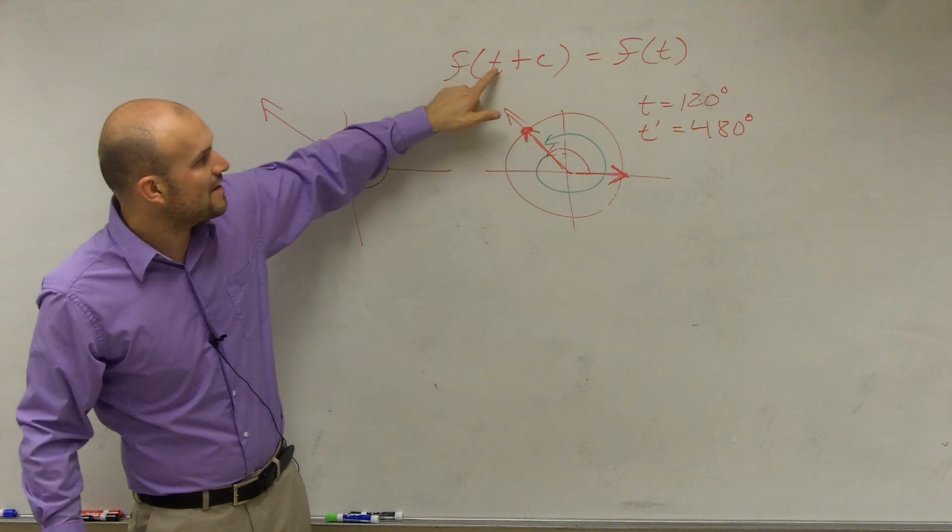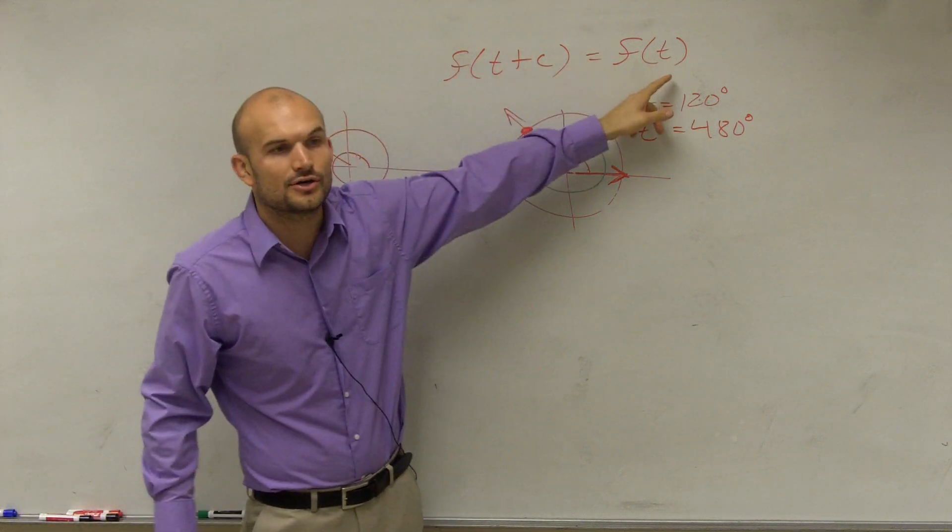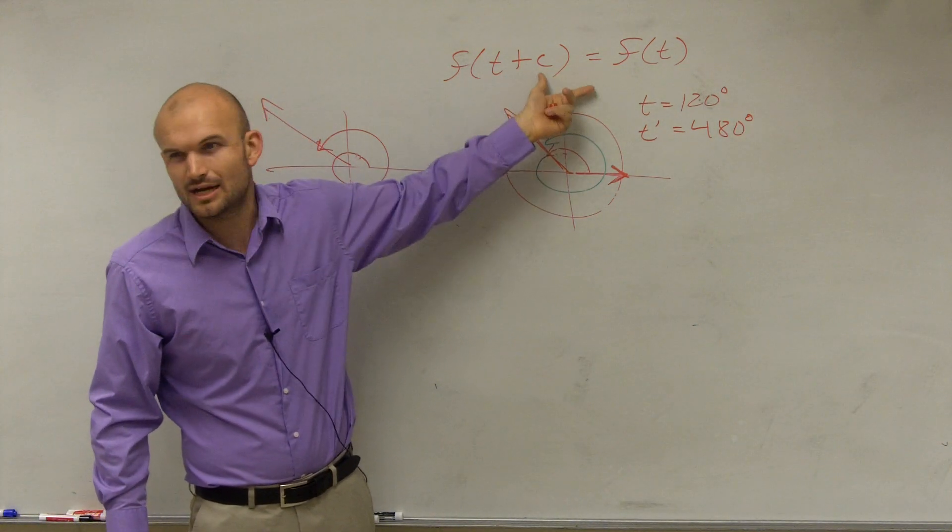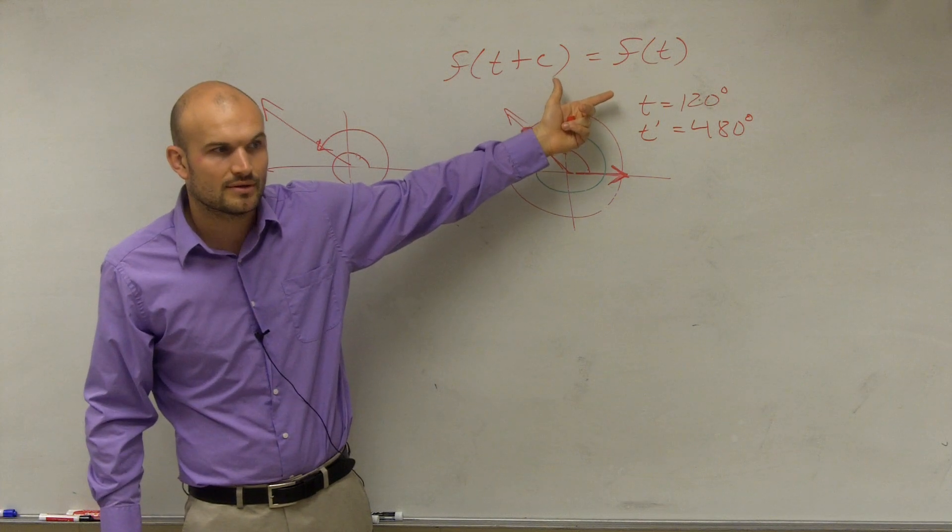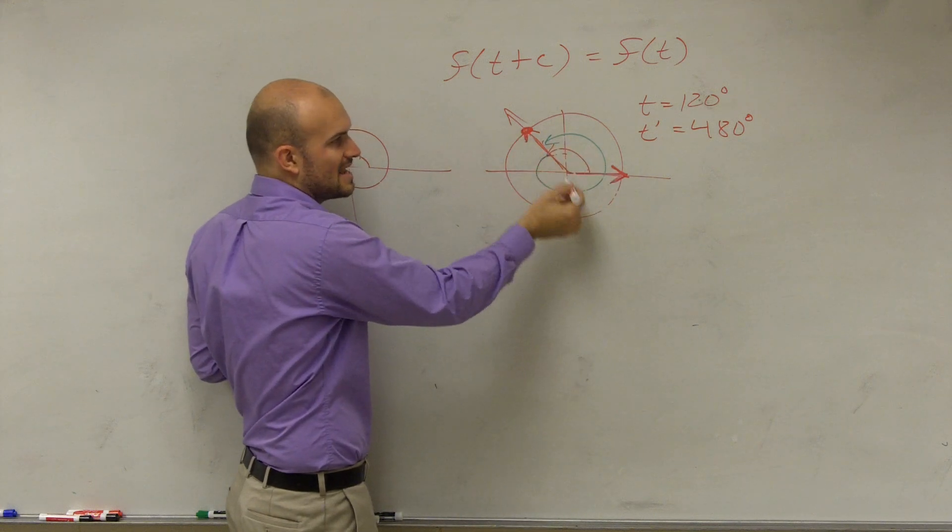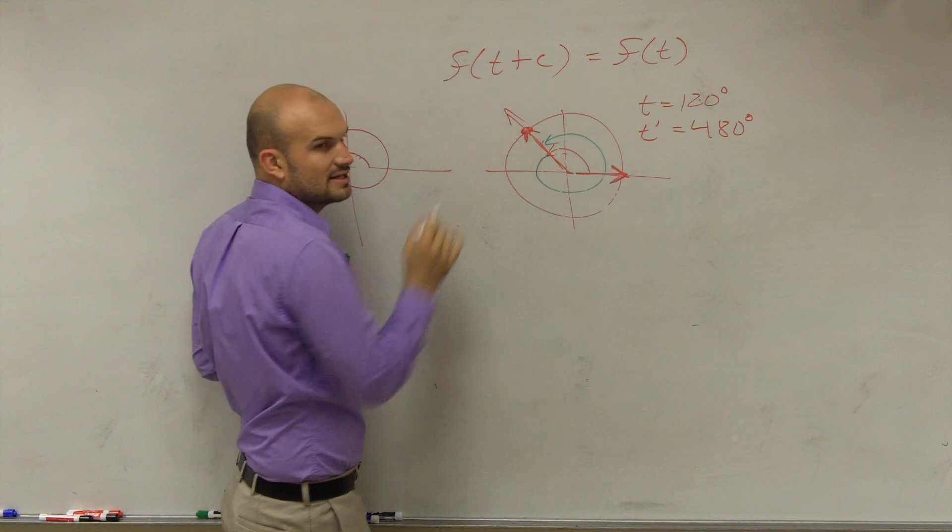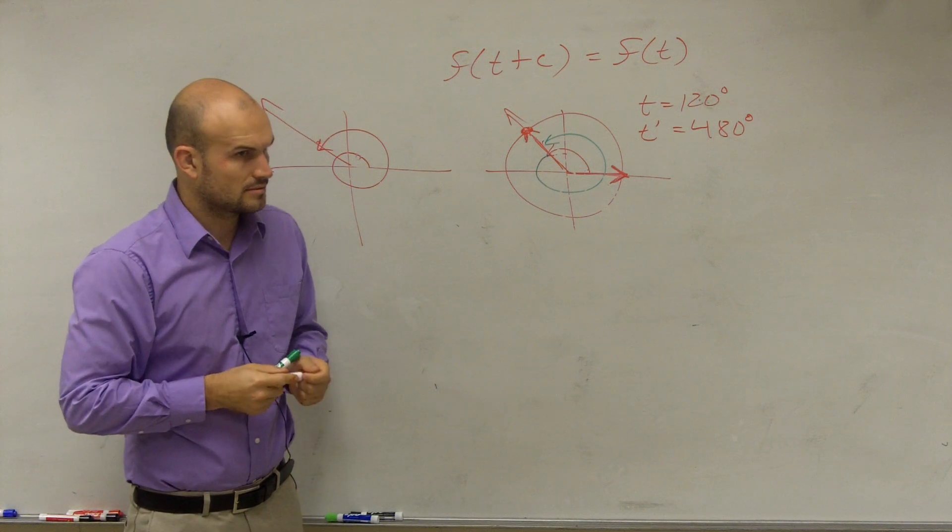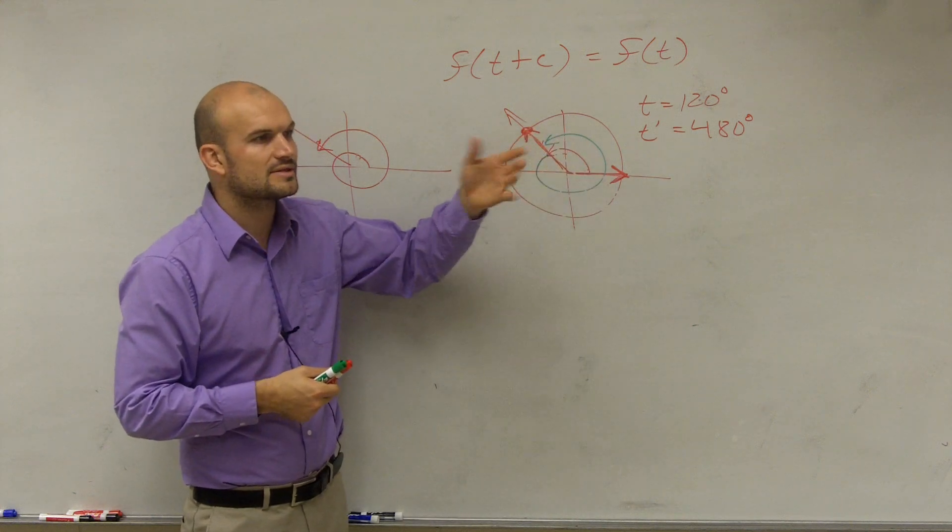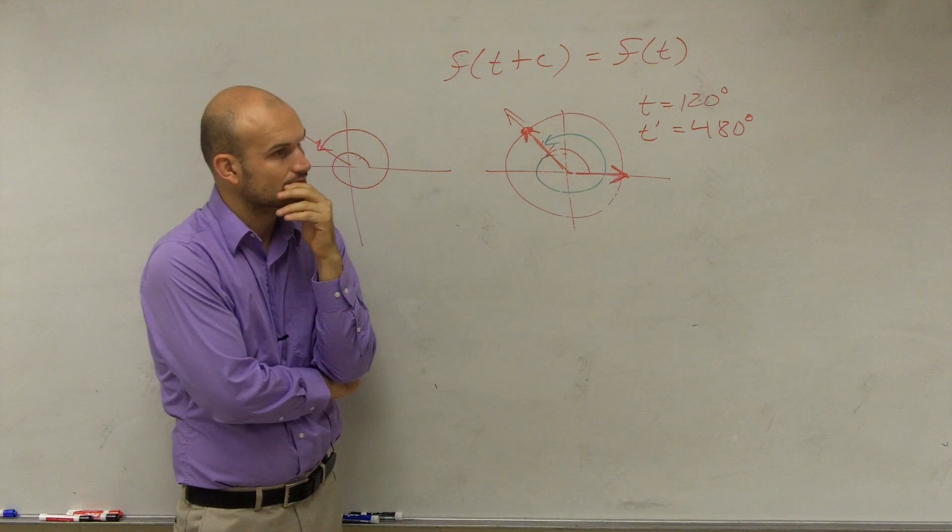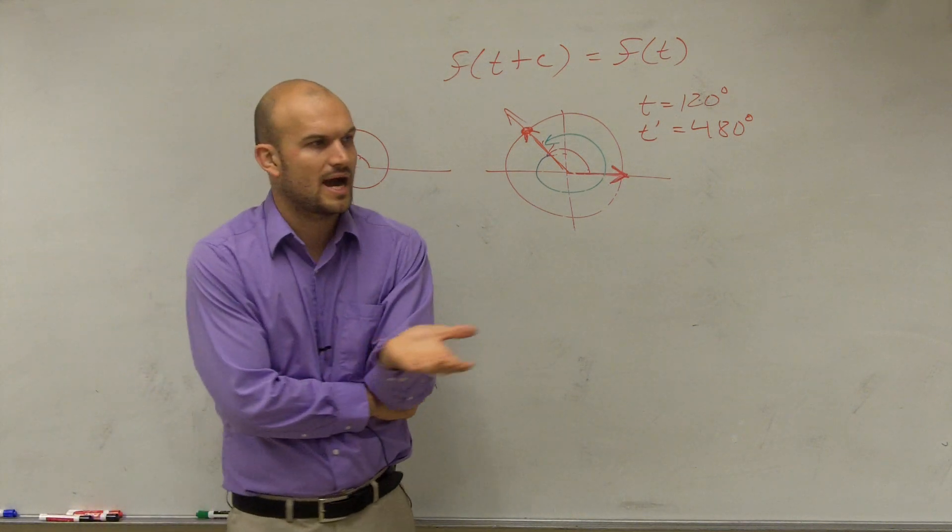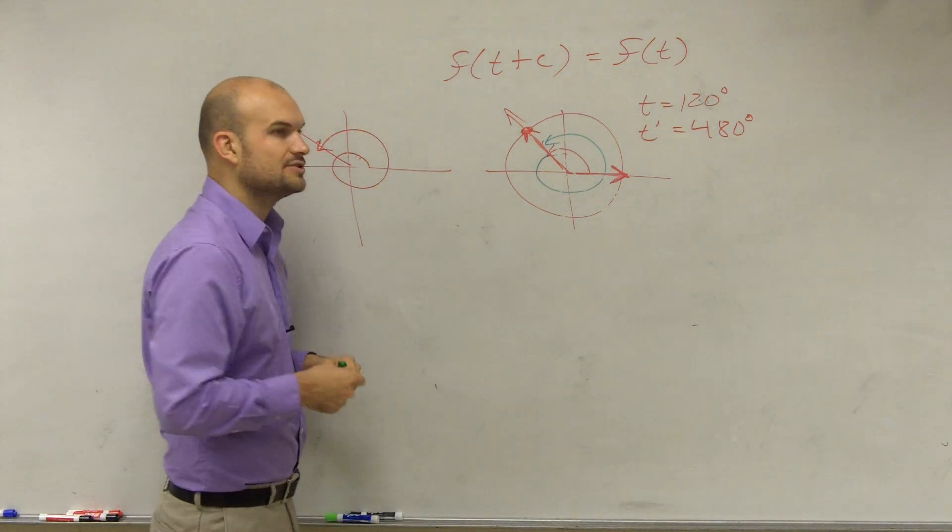So if I have my t, which is 120 degrees, and I'm adding 360, I have equivalent points on the unit circle. Do you see how this angle and then the one doubled is the exact same angle? They're going to provide you with the same point on the circle. So how are we going to use this to help us with our homework? Let's do an example.